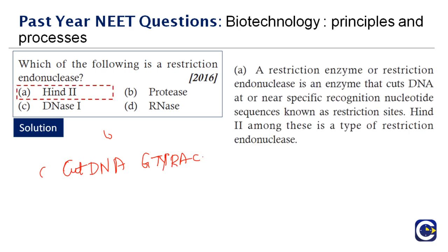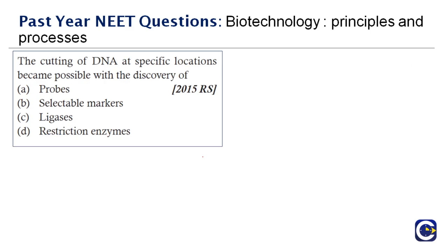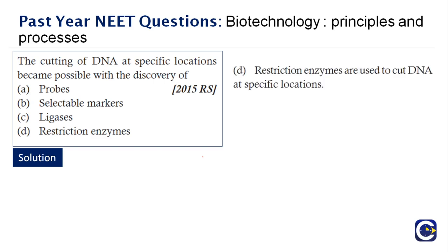Next question: the cutting of DNA at specific locations became possible with the discovery of blank. The answer is restriction enzymes — just as we discussed in the previous question. The cutting process happens only at the recognition nucleotide sequence. You can cut, insert, edit, and do many things — all made possible by the discovery of restriction enzymes.